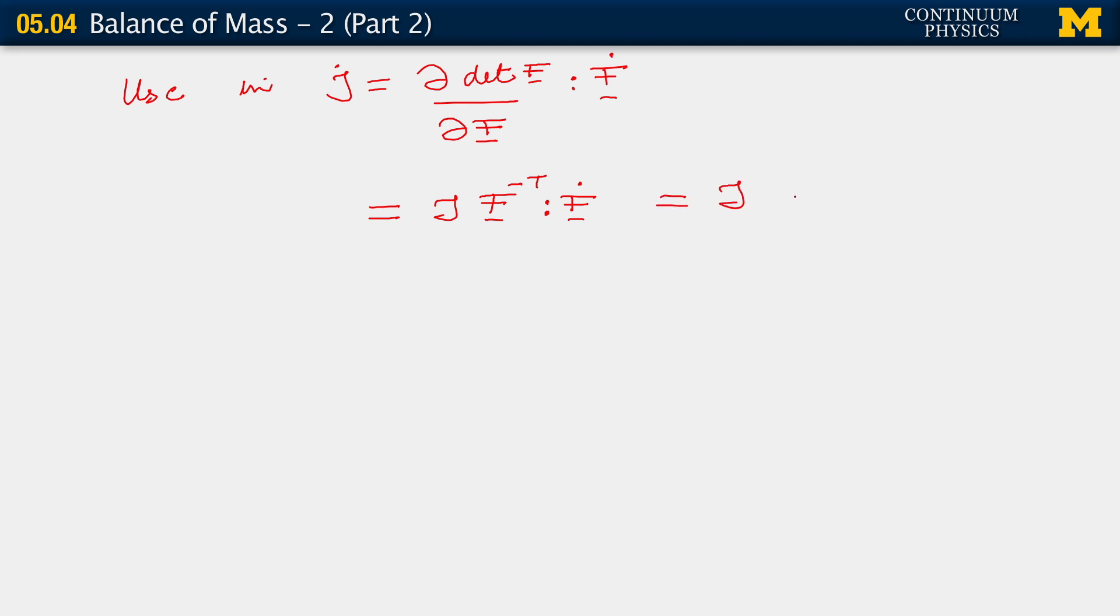F inverse transpose contracted with f dot. Coordinate notation. F inverse transpose, remember, is simply the transpose of f inverse. So, we have f inverse here. I'm going to write its indices here as capital I, little i. And this has to be multiplied by f dot, which has indices little i, capital I.